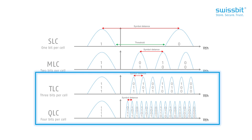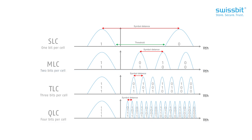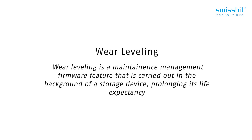Error correction coding is arguably one of the most important flash controller features. As the more affordable, higher-density flashes are more prone to bit errors, as explained in the last video, the demands on these error correction units within the flash controller are growing.